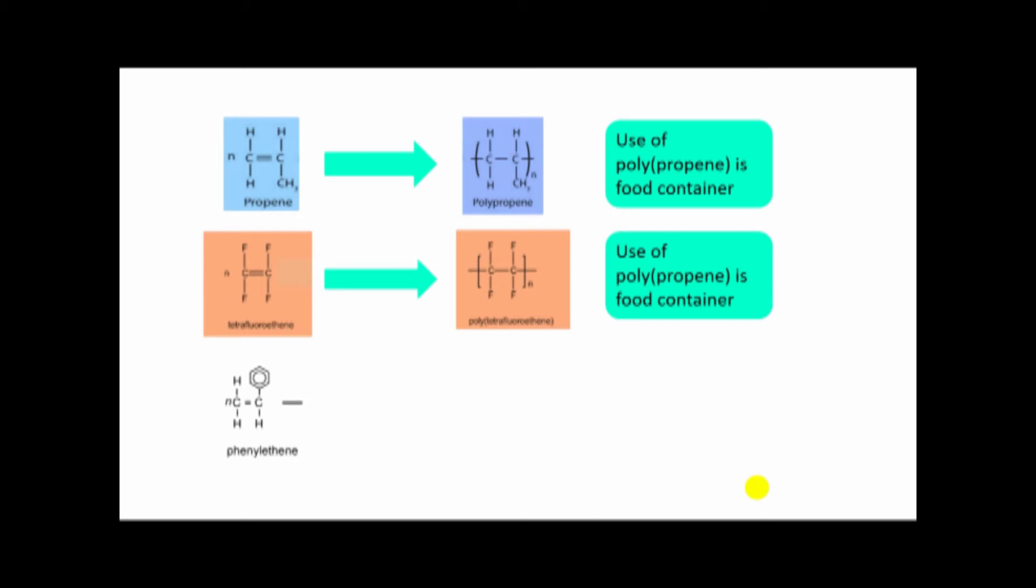Phenylethene is the monomer, and polyphenylethene is the polymer. The use of polystyrene or polyphenylethene is in egg boxes. There are many other examples like Perspex and so on. You can explain any one if you understand the mechanism of addition polymerization.